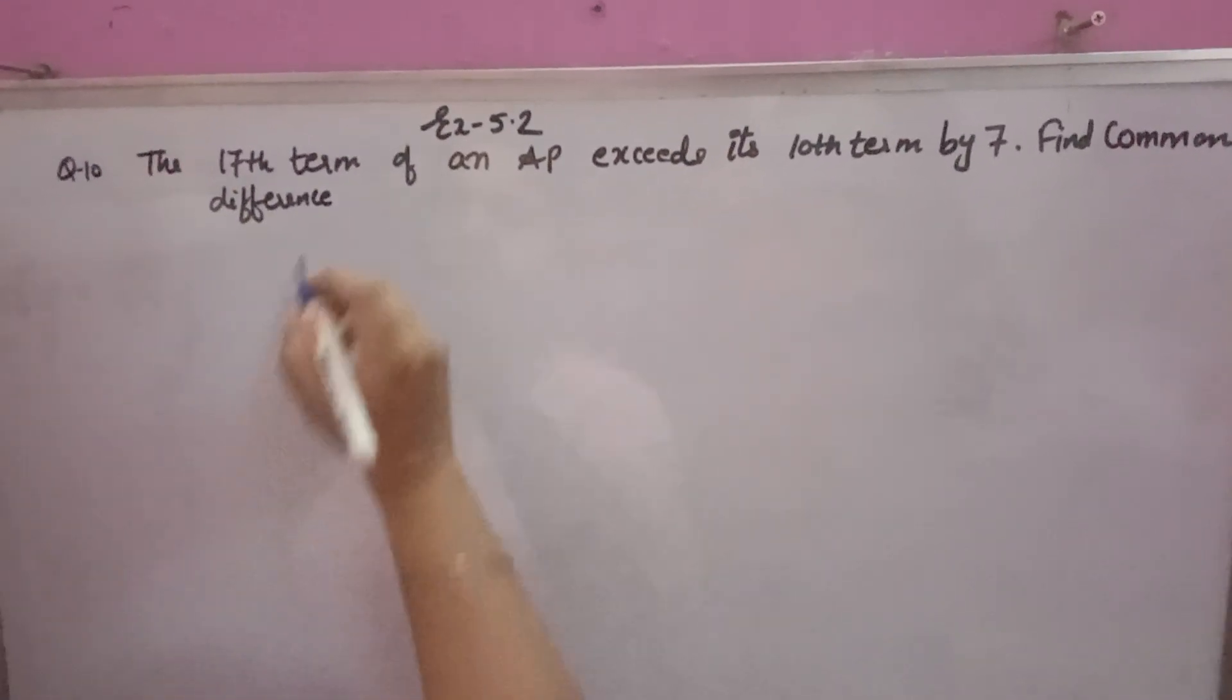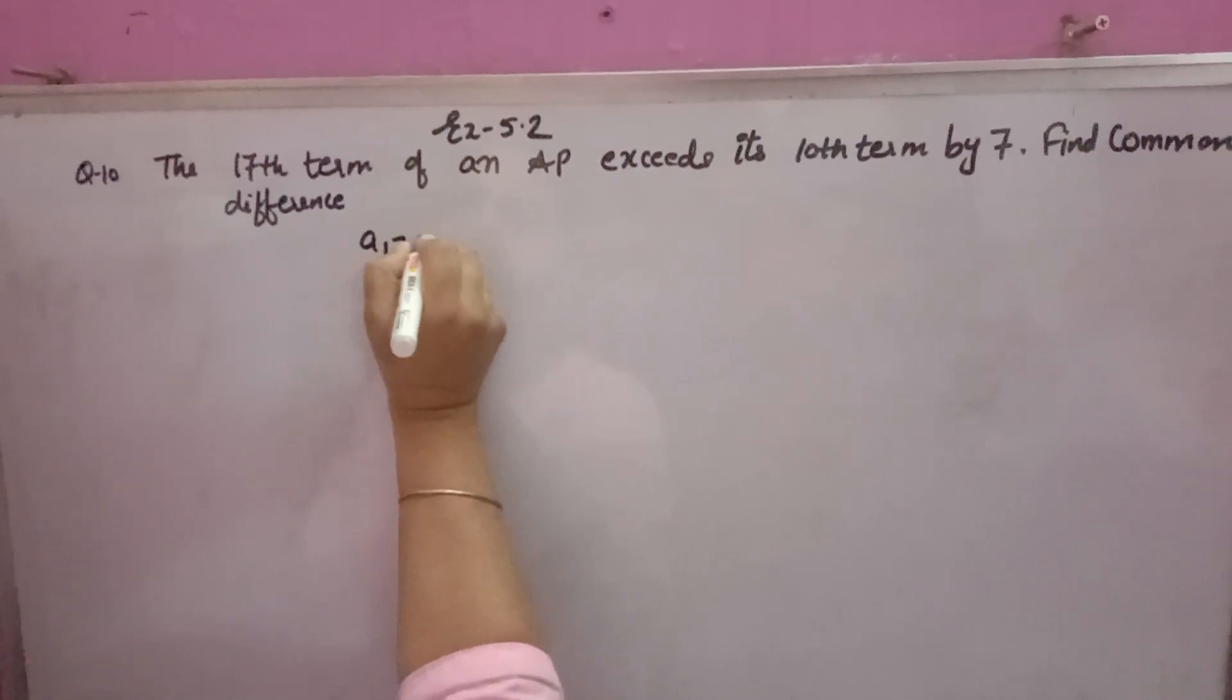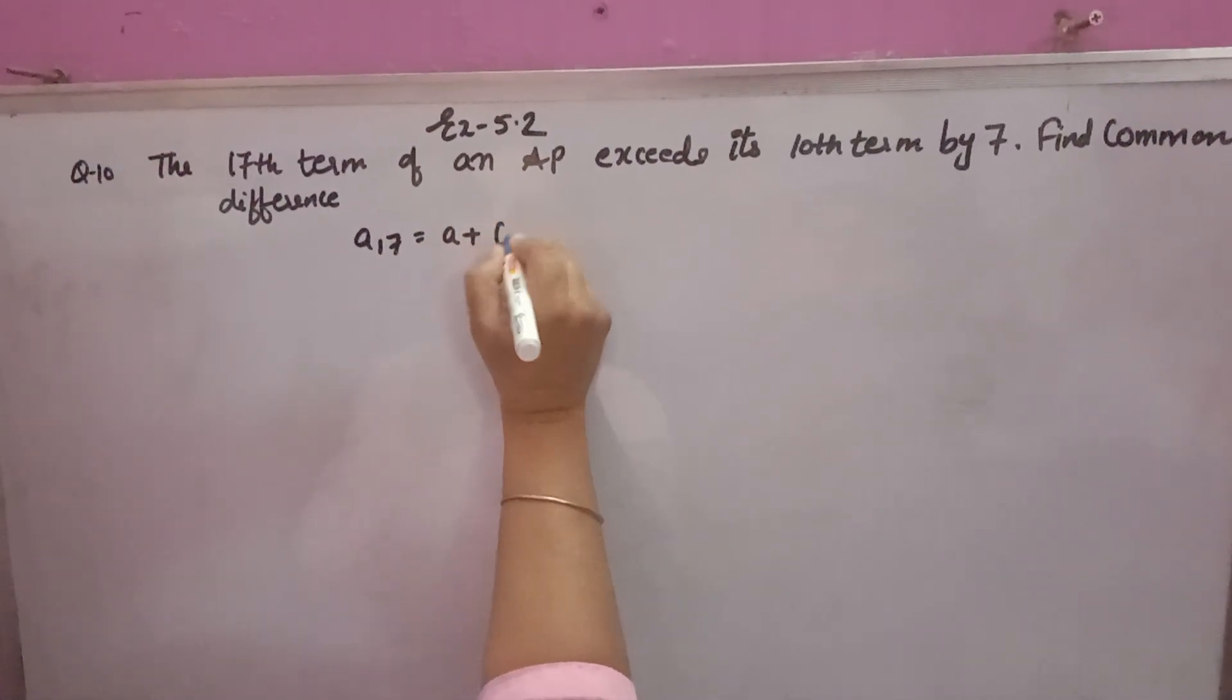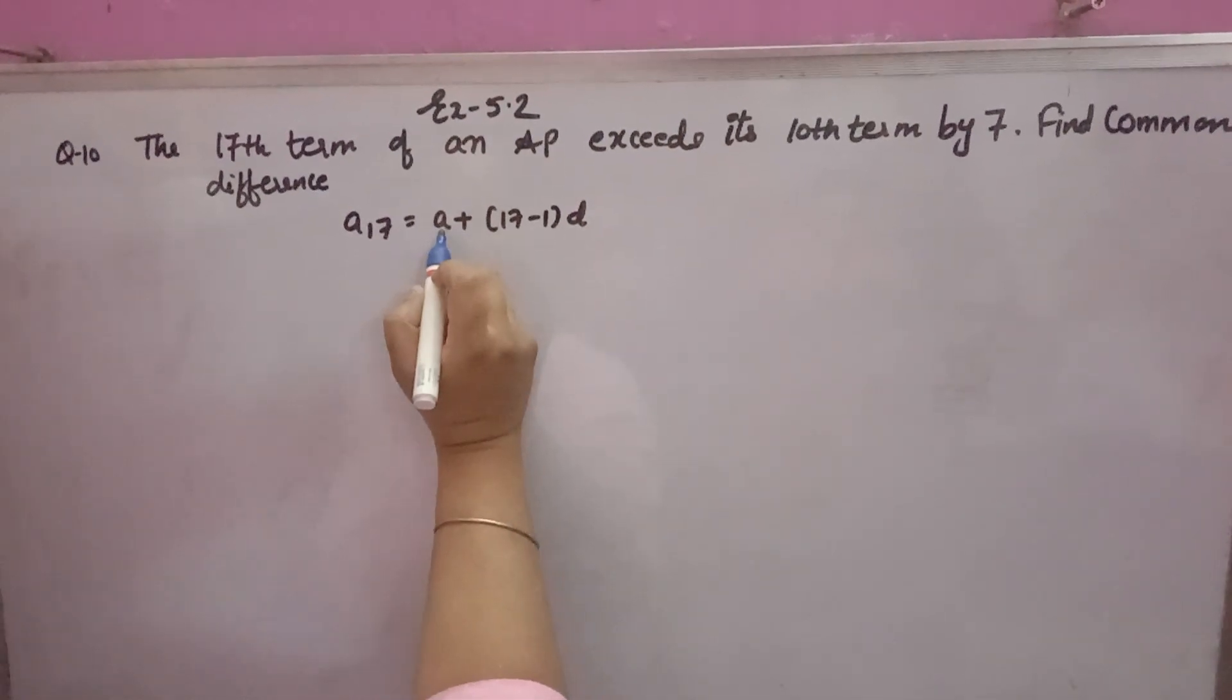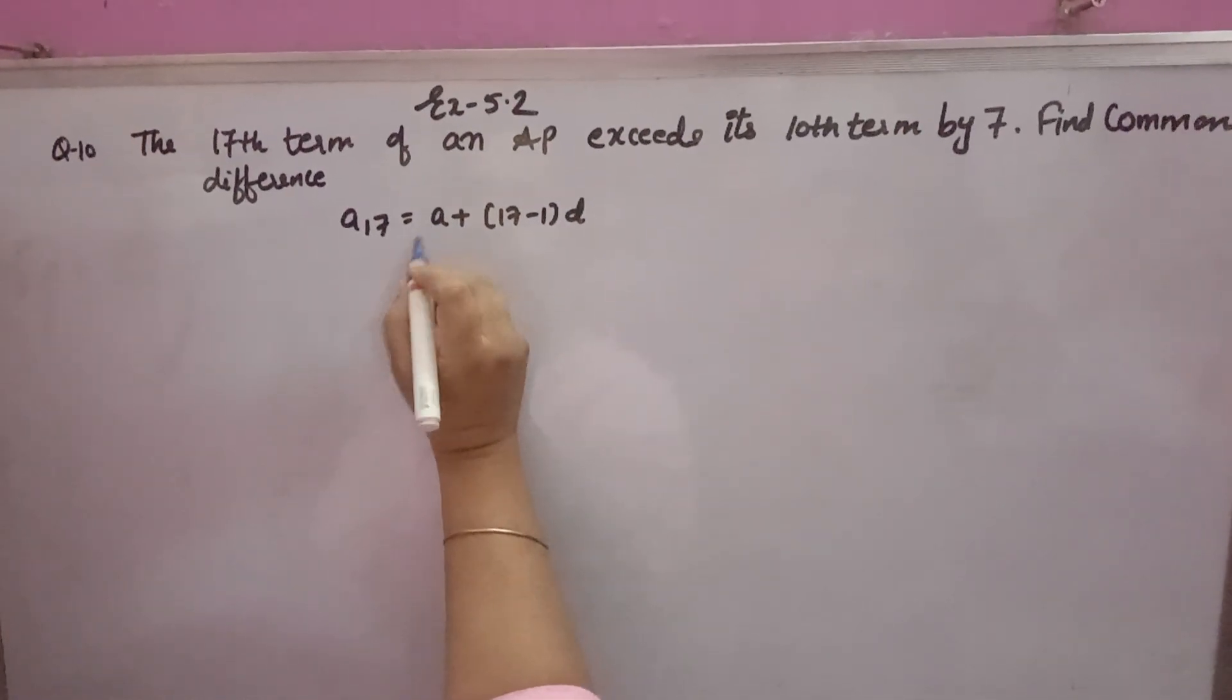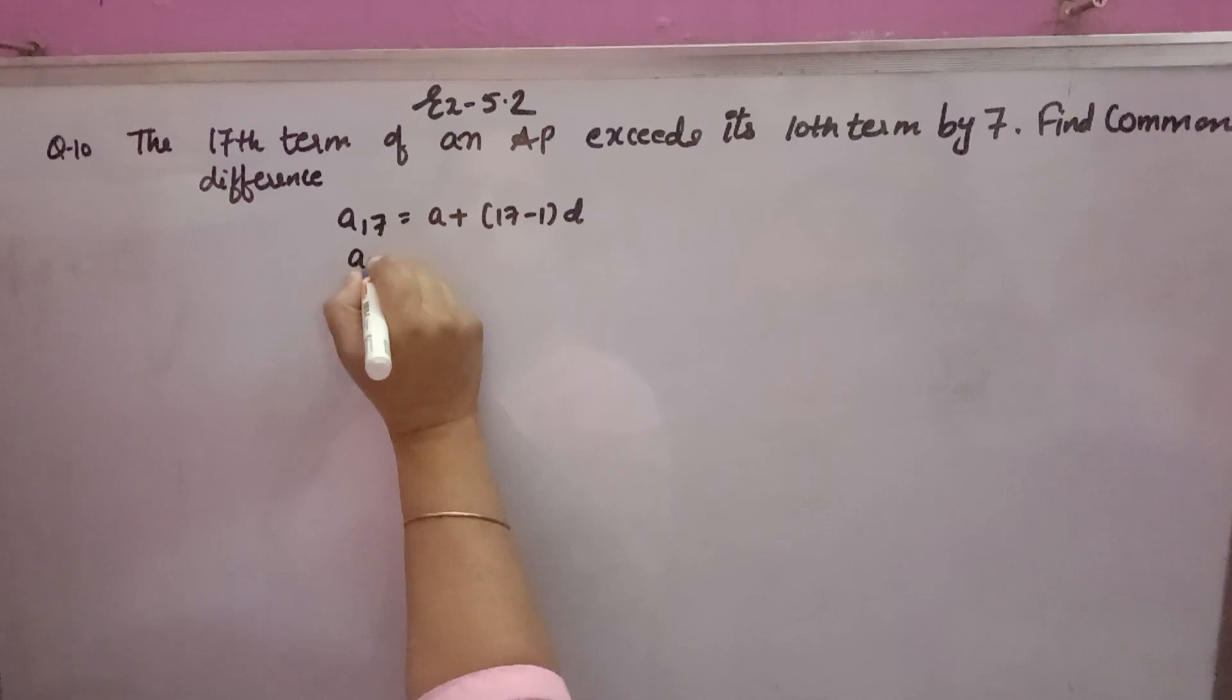The 17th term of an AP is A plus 17 minus 1 into D, where A is the first term and D is the common difference. This exceeds the 10th term.